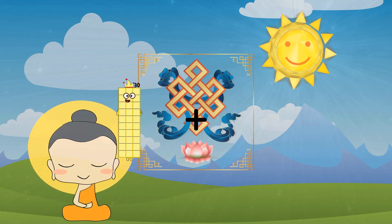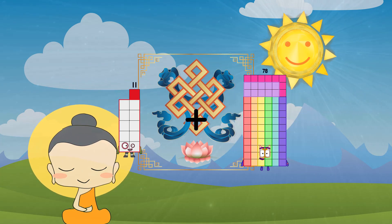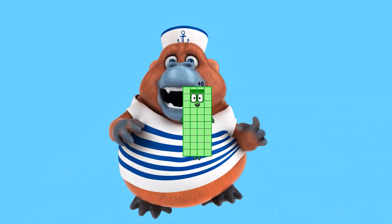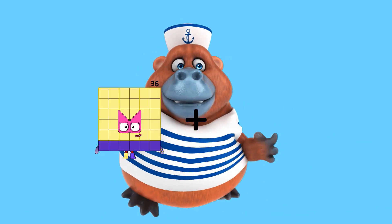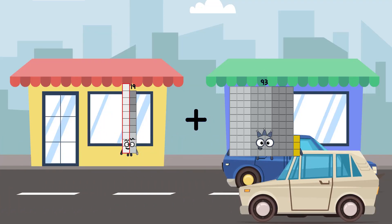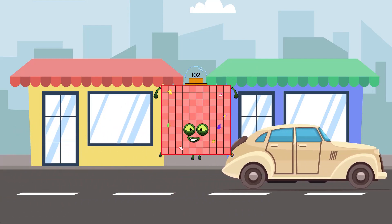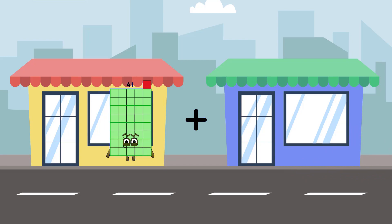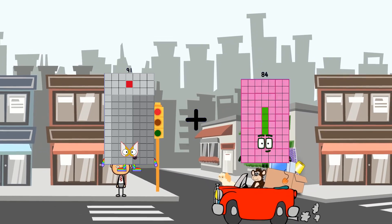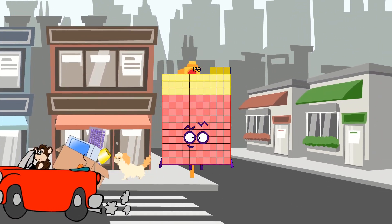11 plus 29 equals 40, 19 plus 83 equals 102, 91 plus 42 equals 133.